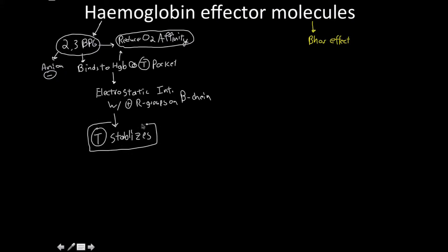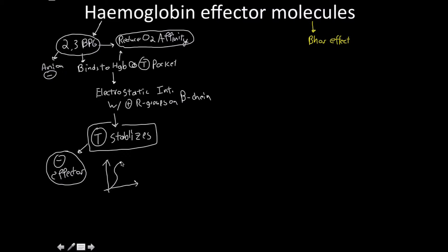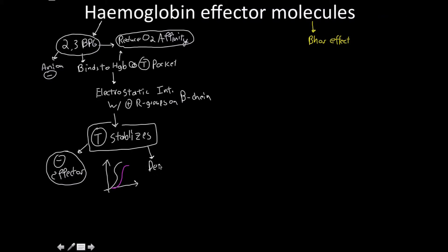This electrostatic interaction with the positively charged R groups on the beta chain is going to induce a conformational change that results in stabilization of the T state. The T state is going to be stabilized by this conformational change. I would describe 2,3-BPG as a negative effector molecule — reducing affinity is the same as increasing the Km. So the sigmoidal curve is going to shift to the right, stabilizing the T state, which is the deoxygenated form.